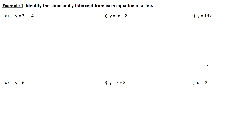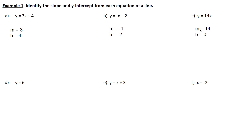Now we want to identify the slope and y-intercept of each equation of a line. We have a slope of 3 and a y-intercept of 4. Over here, we have a slope of negative 1 because of the negative sign in front of x, and a y-intercept of negative 2. Over here, we have a y-intercept of 0 — this is a direct variation, it passes through the origin — with a slope of 14. And here, a slope of 0 and a y-intercept of 6.